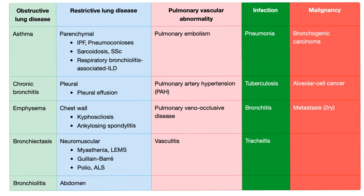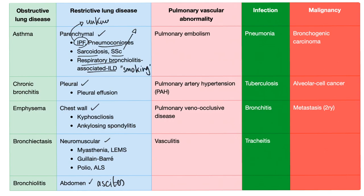Restrictive lung disease could be parenchymal — meaning the disease is in the lung itself — pleural, in the pleura or chest wall, neuromuscular, or even in the abdomen, such as ascites or organomegaly like hepatomegaly or splenomegaly. Parenchymal examples include idiopathic pulmonary fibrosis, pneumoconiosis, sarcoidosis, systemic sclerosis, scleroderma, rheumatoid arthritis, and respiratory bronchiolitis-associated interstitial lung disease, which is associated with smoking. Smoking can cause both obstructive lung disease like COPD and restrictive lung disease.